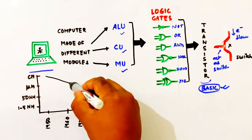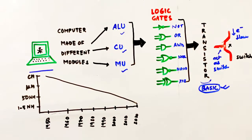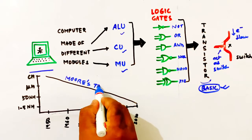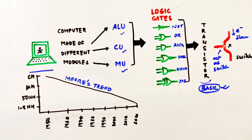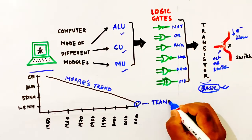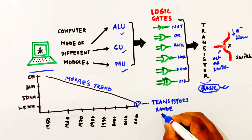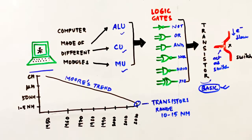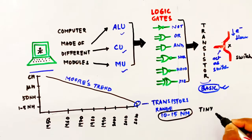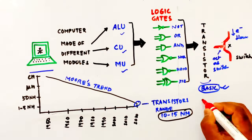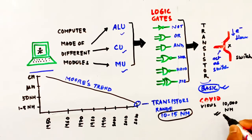The transistor's history shows it started with a very large size. In 1950, the transistor's size was very large. But today's transistor size is 10 to 15 nanometers, and even smaller nanometers are possible. For comparison, the COVID virus is 10,000 nanometers — so the transistor is incredibly small.